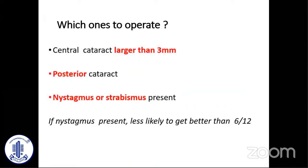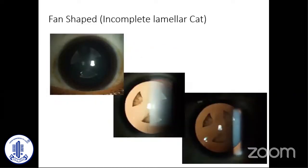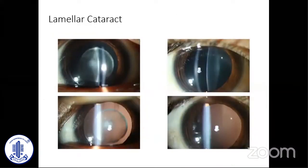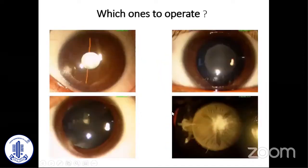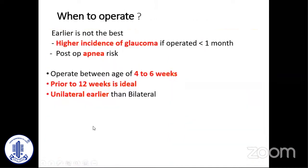Which ones to operate? Those which are more than three millimeters and blocking the central pupil. Posterior polar cataracts should be operated because they block vision being close to the nodal point. If nystagmus or strabismus is present, operate those patients. On dilatation, if the central part is clear, you can wait. Looking at different zonular cataracts: the second and fourth need not be operated; the first and fourth shown here need surgery; the second with deviation needs surgery with close follow-up; the third you can wait on with strict follow-up.